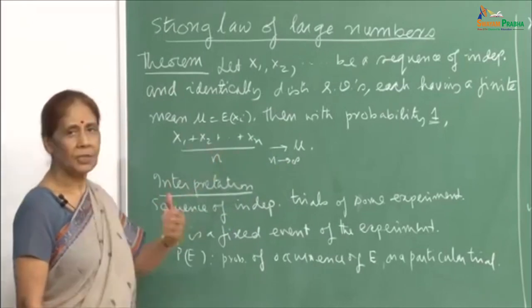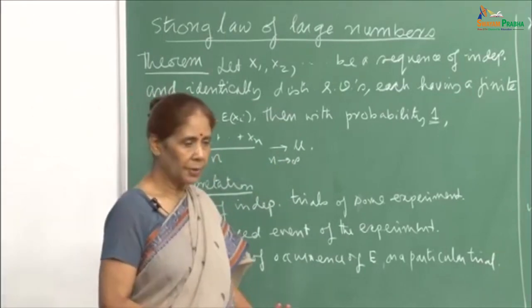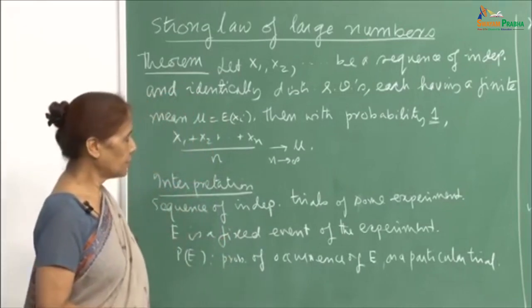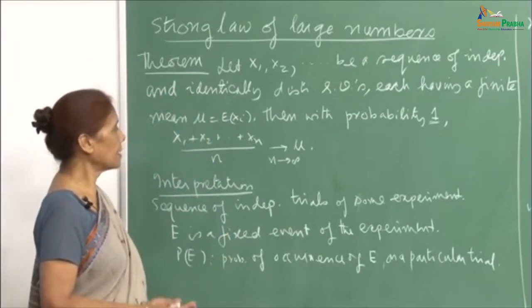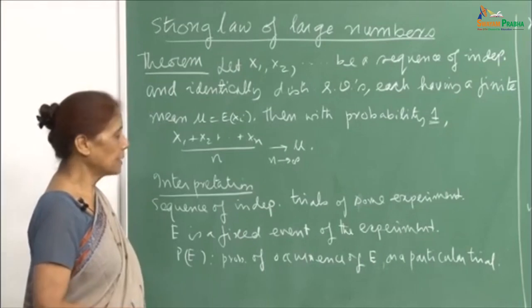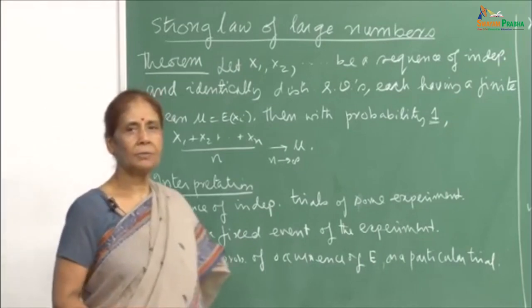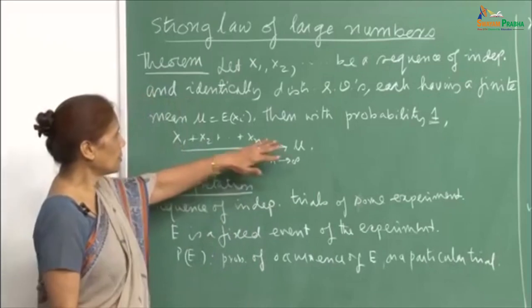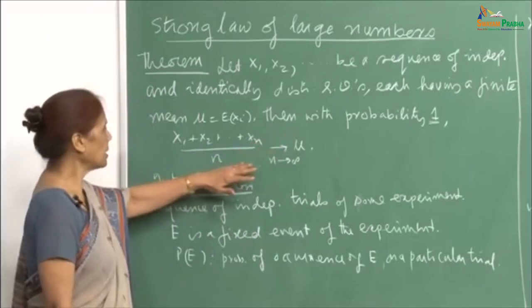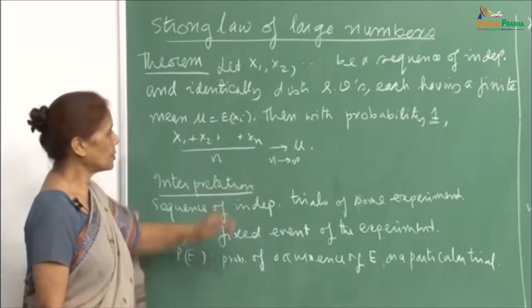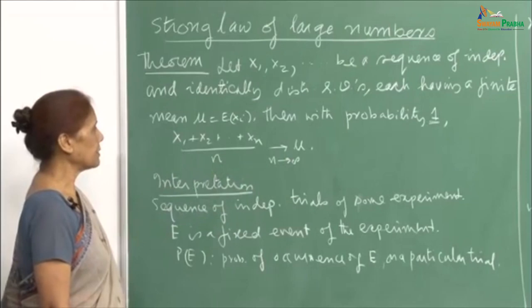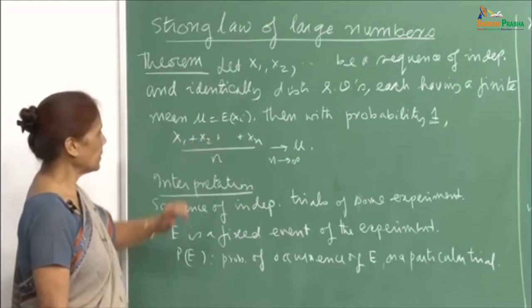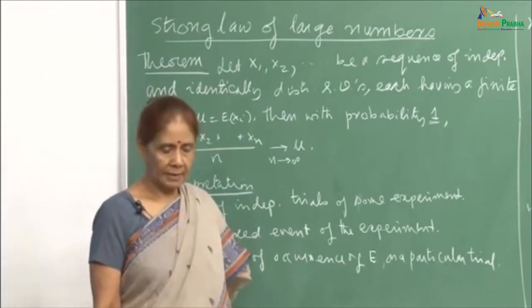This is a sure event. You can immediately see the difference between the weak law of large numbers — there it said that x_bar_n converges to mu in probability. Here, we are saying that with probability 1, x_bar_n will converge to mu. This is a sure event, provided the expectation of each x_i is finite.